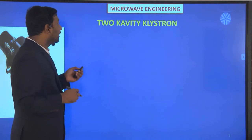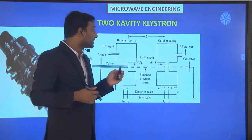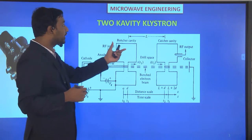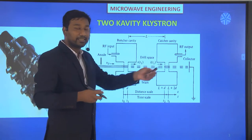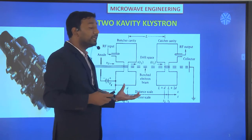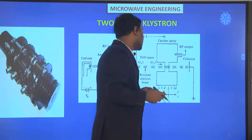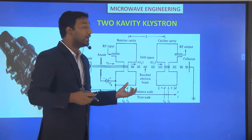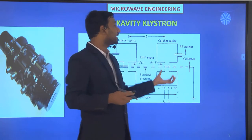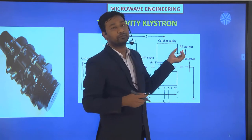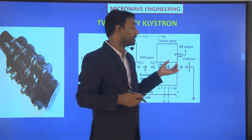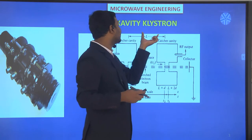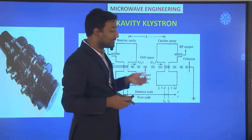First we will revise all those things, just to recap. In the two-cavity klystron, one is the buncher cavity and another one is the catcher cavity. RF input is given to the buncher cavity and we take the RF output from the catcher. The distance between the buncher cavity and catcher cavity is considered as L.